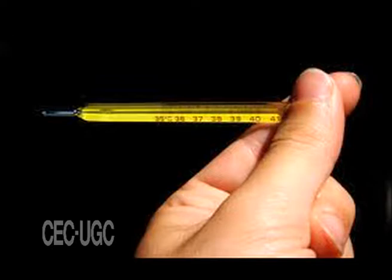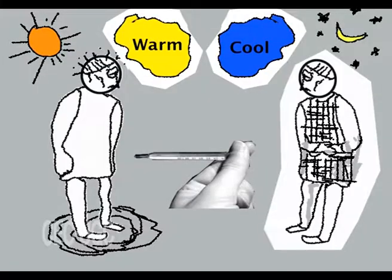Among scientific researchers, empirical evidence—as distinct from empirical research—refers to objective evidence that appears the same regardless of observer. For example, a thermometer will not display different temperatures for each individual who observes it. Temperature as measured by an accurate, well-calibrated thermometer is empirical evidence. By contrast, non-empirical evidence is subjective, depending on the observer. Observer A might truthfully report that a room is warm, while Observer B might truthfully report that the same room is cool, though both observe the same reading on the thermometer.